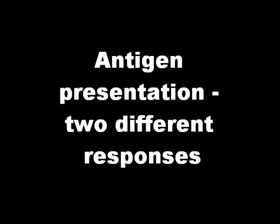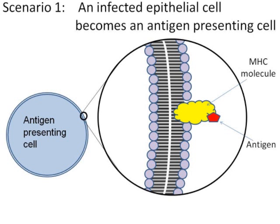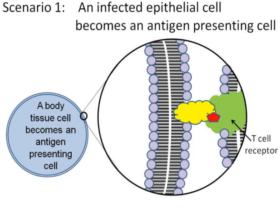It's very important that you understand the difference between the two following scenarios. The first is when an infected epithelial cell becomes an antigen-presenting cell. Here the antigen is presented by the MHC molecule and a T cell receptor binds to it, as you can see in this microscopic magnification. The response of the T cell to a normal body cell presenting antigen is to become a cytotoxic T cell, and it will kill the infected cell.